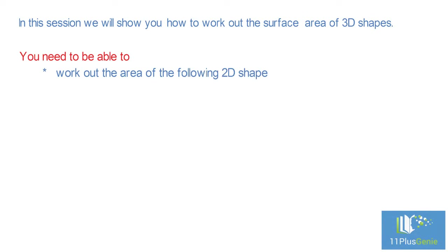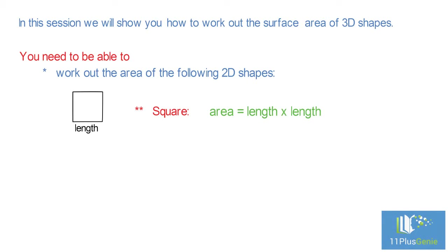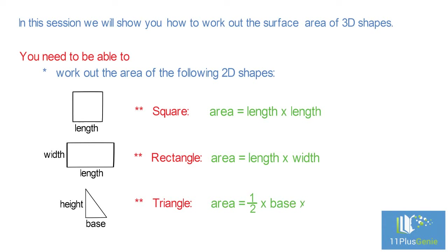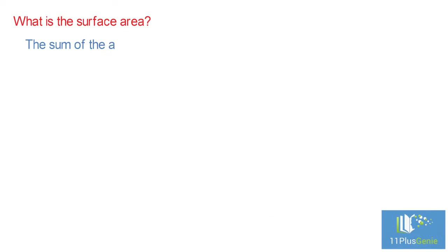Square: area equals length times length. Rectangle: area equals length times width. Triangle: area equals half times the base times the height. What is the surface area? The sum of the areas of all the faces of a prism is called the surface area.